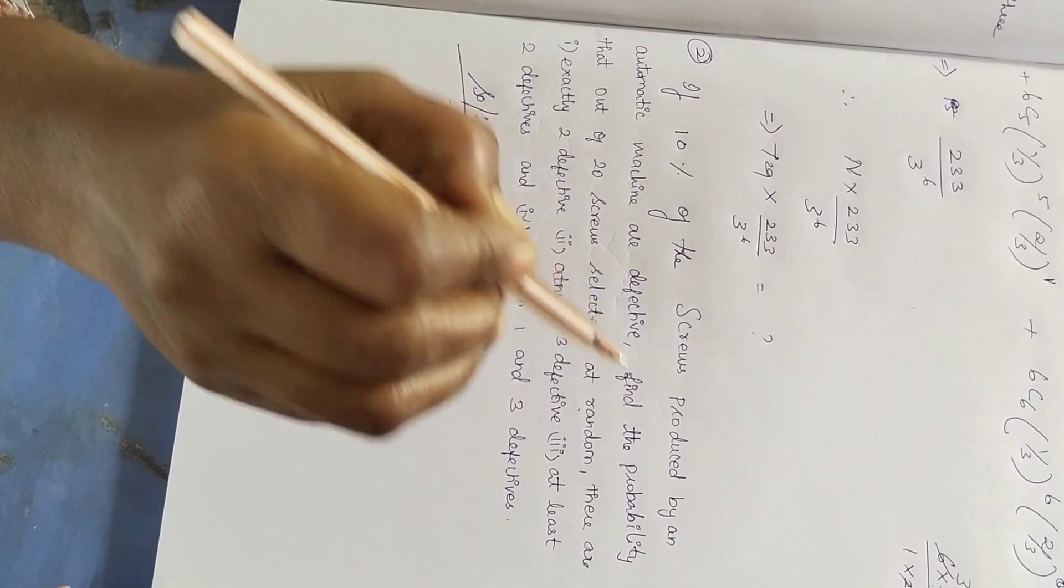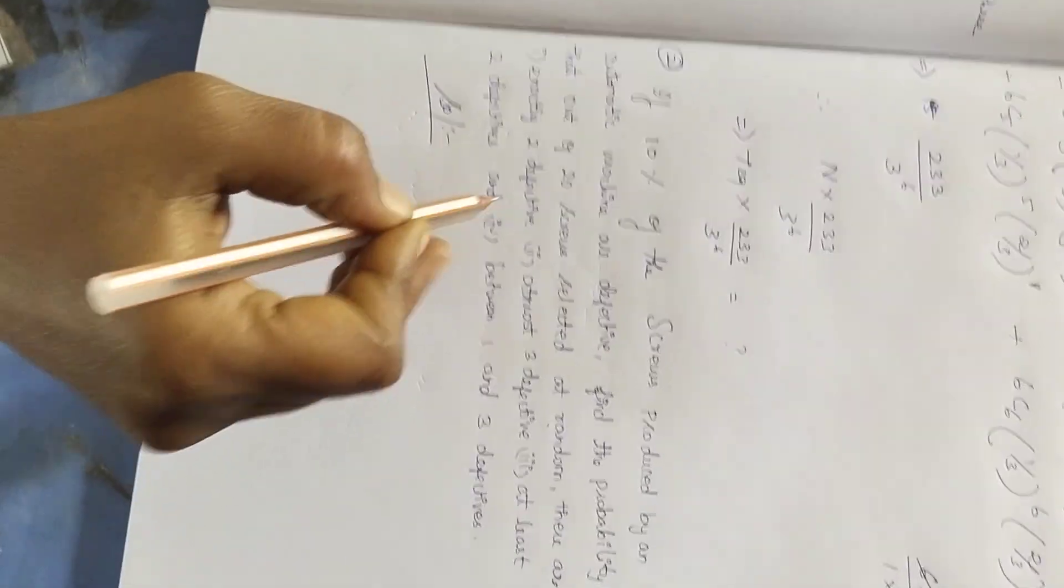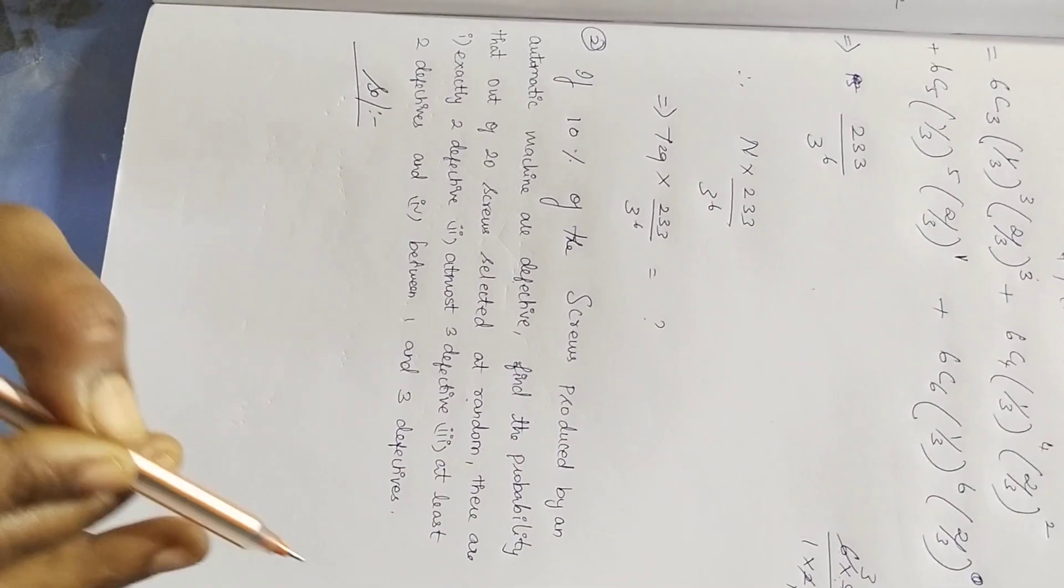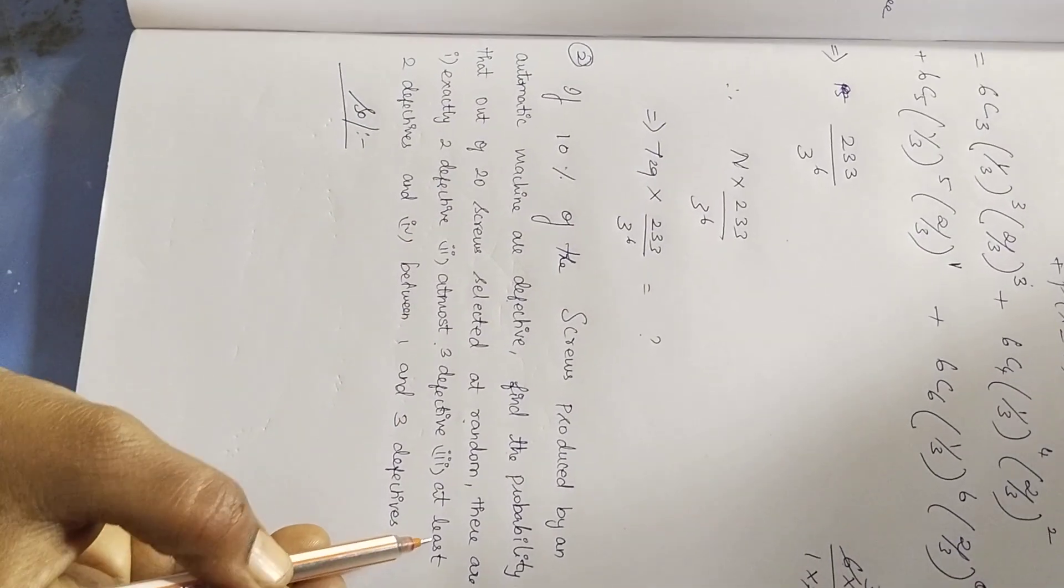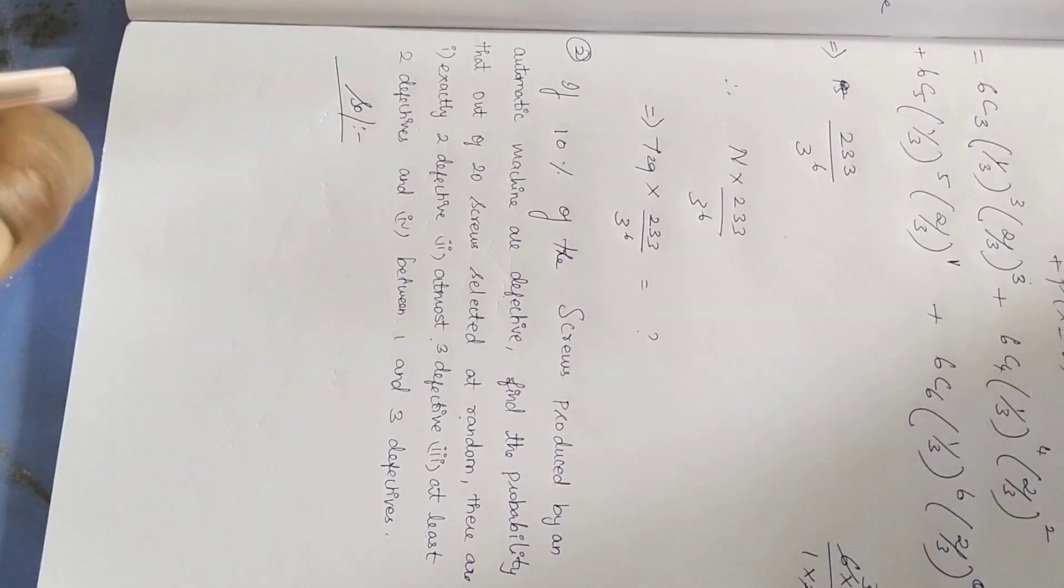In this case, we have four cases. We can see exactly two different things, at most, at least, between. So there are four cases.